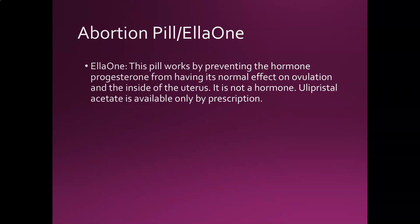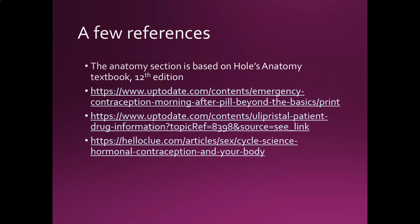The abortion pill — ulipristal acetate — works by preventing progesterone from having its effect. Since progesterone is important to maintain early pregnancy, blocking it prevents the uterine lining from sustaining implantation. Unlike Plan B, this is a chemical — not a hormone — and it's only available by prescription, not over the counter. That's the summary on everything. If you have any questions, drop them in the comments and I'll help answer them.